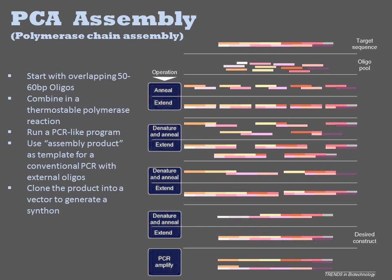Typically, PCA is done in two stages. First, the equimolar mix of oligos is reacted with a polymerase under PCR-like conditions. Second, the material from the first reaction is used as the template for a conventional PCR reaction involving two external primers.